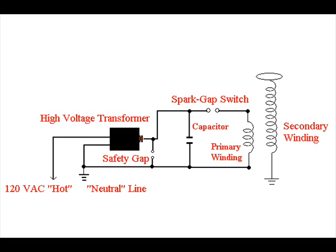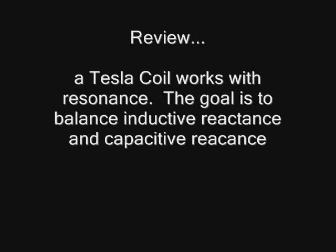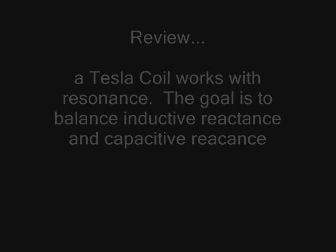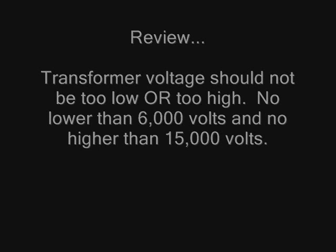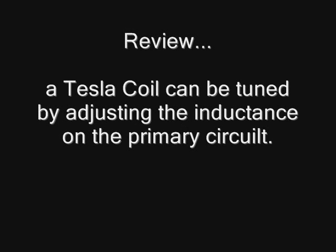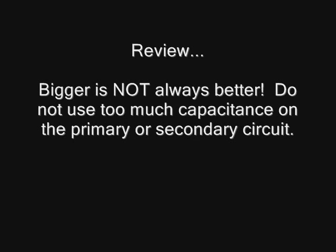Let's review some basic tips for building and tuning a Tesla coil. A Tesla coil works with resonance — the goal is to balance inductive reactance and capacitive reactance on the primary and secondary circuits. The transformer voltage should be no lower than 6,000 volts and no higher than 15,000 volts. One way to tune is by adjusting the inductance on the primary circuit — try adding or removing turns and see how it affects the output. Bigger isn't always better: don't use too much primary or secondary capacitance, or the circuit won't be in tune.